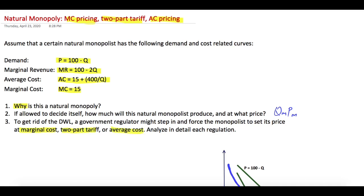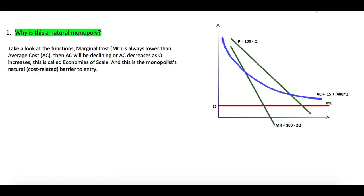Let's start by graphing this natural monopoly from the given information. Marginal cost equals 15. You can draw the average cost curve — that's the blue line — and it's always above the marginal cost and decreasing. Then draw the demand curve that intersects average cost and marginal cost, and finally draw the marginal revenue, which is always below the demand curve. Make sure you draw it correctly before answering any question.